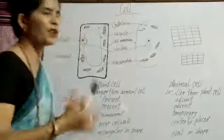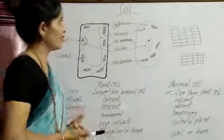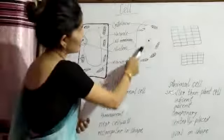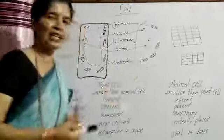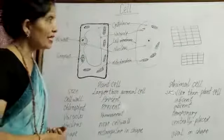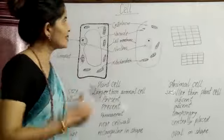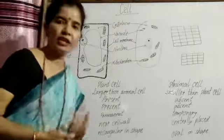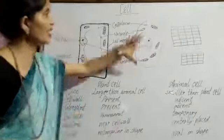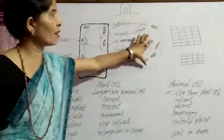And here is small vacuoles. So, it is temporary in animal cell. And here you can see cytoplasm, thick liquid jelly. It contains necessary things like protein, carbohydrates, necessary things or chemicals for cell.